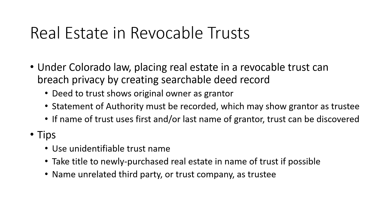A statement of authority must be recorded, which may show your name as trustee if you are the trustee of the trust, which means that even if the trust name is not associated with you, you personally could be associated with a trust. Often, a revocable trust will simply use your first or last name — for example, if I were to create one, I could just use the Griffin Bridgers Revocable Trust, and obviously in that case the trust can easily be discovered as well.